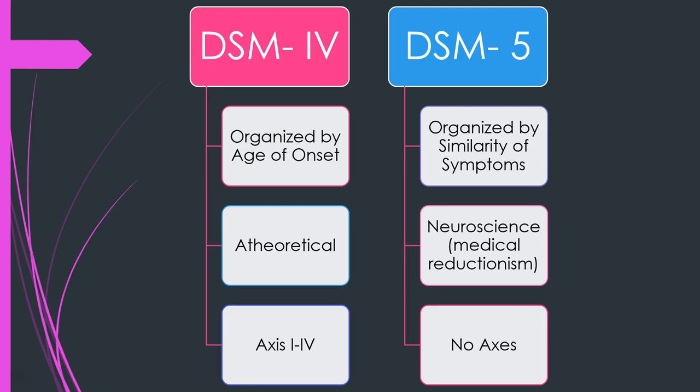In the DSM-4 there were four axes of different diagnostic labels. In the DSM-5 there are no axes, so if you see anything about an Axis I disorder or Axis III consideration, they're referring to DSM-4 — that's not used anymore.